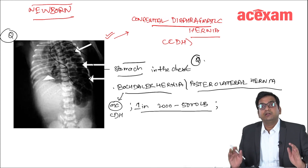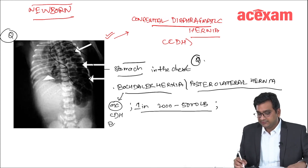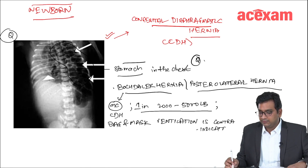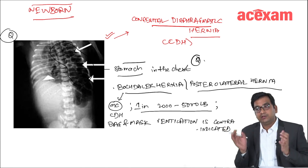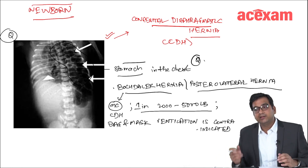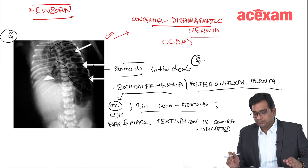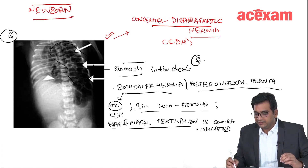Another most important question which is repeatedly asked: bag and mask ventilation is contraindicated in congenital diaphragmatic hernia. Why? Because whenever we push air through the bag, the stomach will also distend, and as the stomach is in the chest, it will compress the lungs, leading to reduced air exchange and worsening of respiratory problems. So bag and mask ventilation is contraindicated.